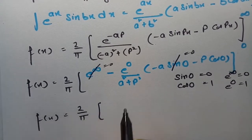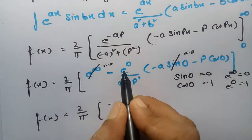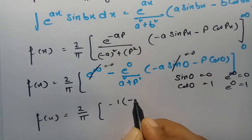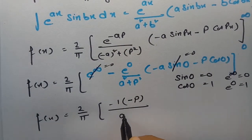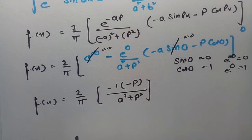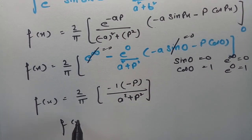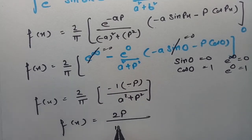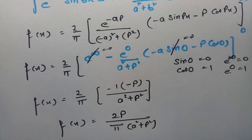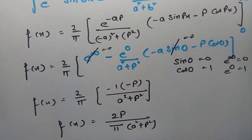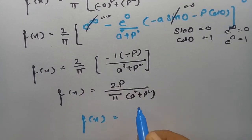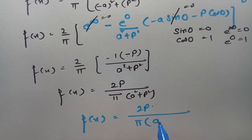Therefore f(x) = (2/π) times −(−p/(a² + p²)), which simplifies to f(x) = 2p / (π(a² + p²)). This is the final answer.